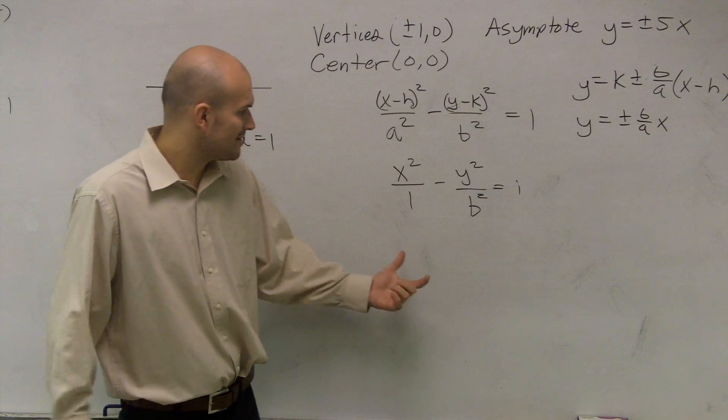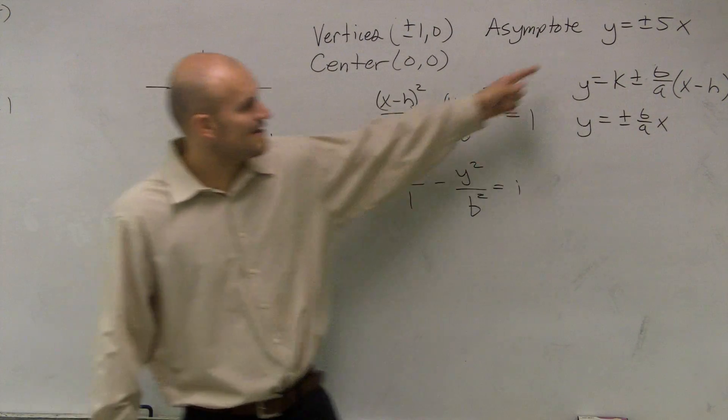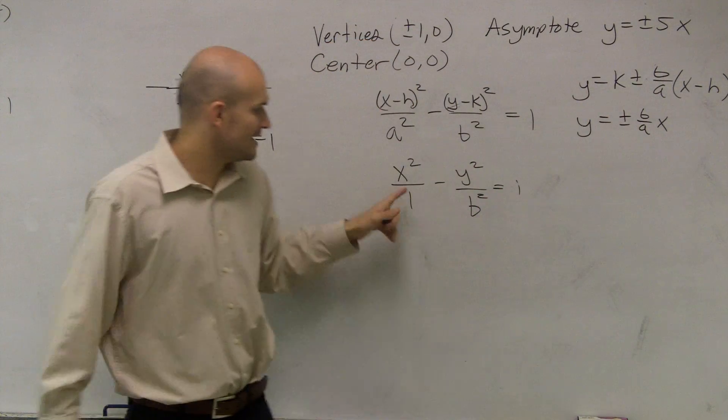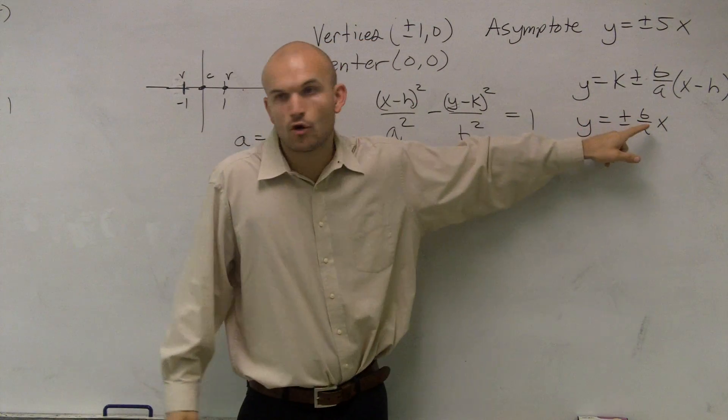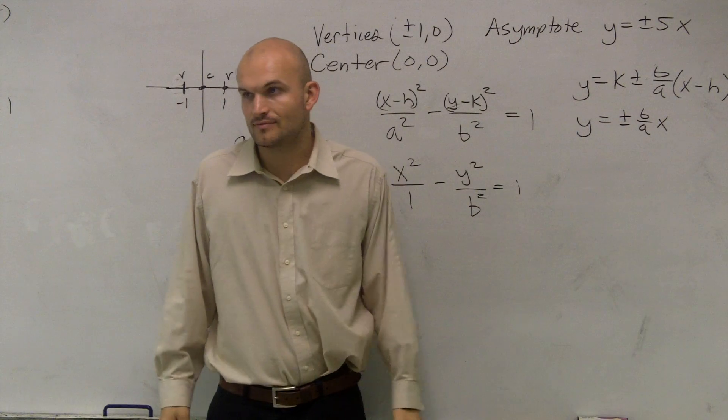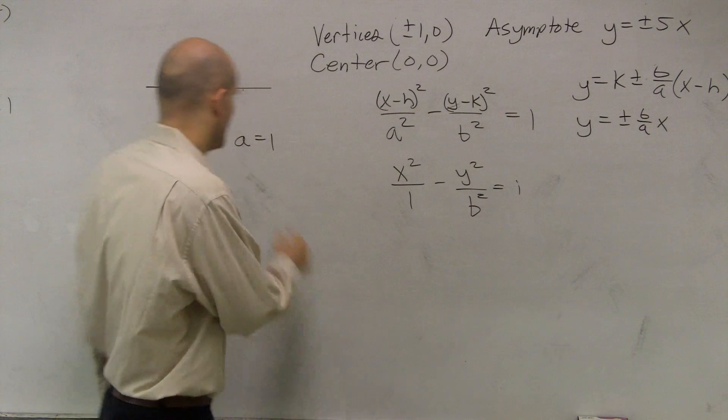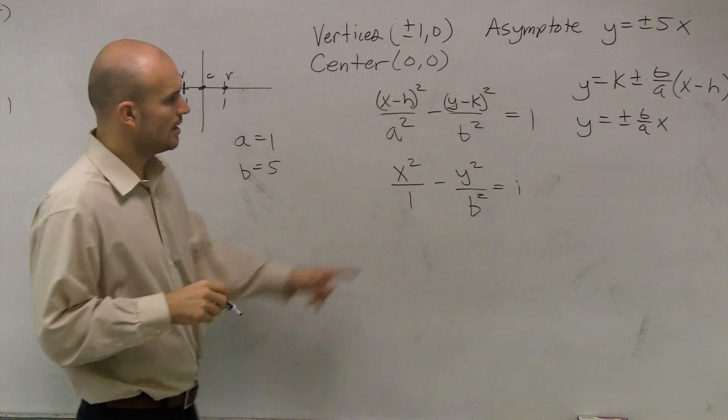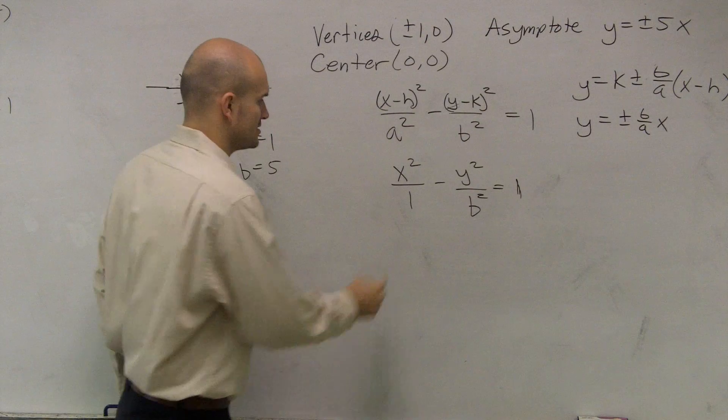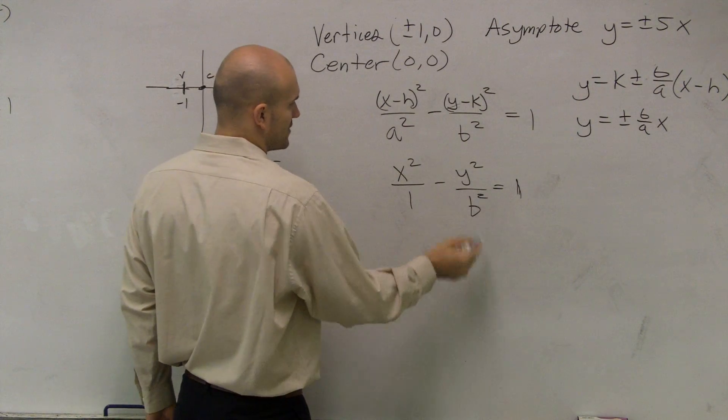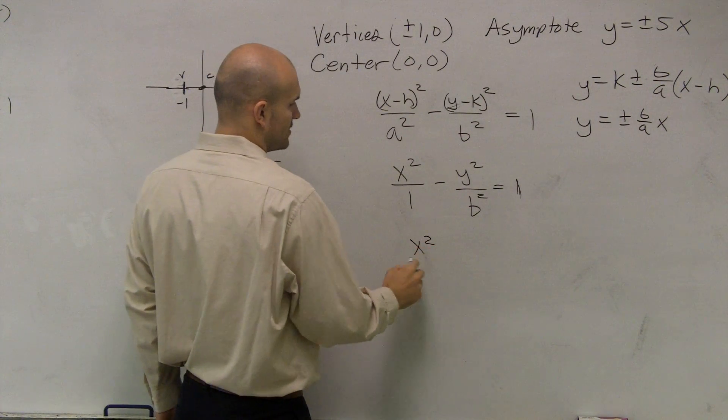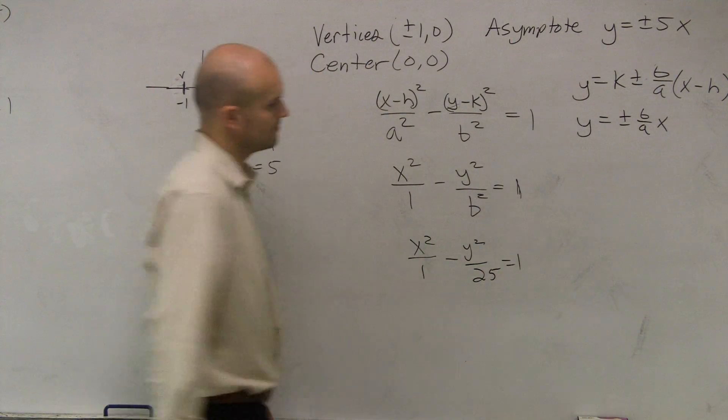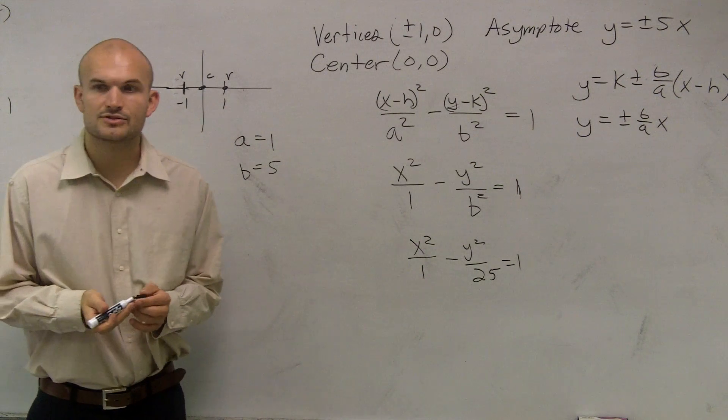So let's think about it, ladies and gentlemen. If I have y = ±5x is equal to ±B over A, the only thing I know is A is 1. Then what number over 1 has to equal 5? Five, right? So therefore, B has to equal 5. Then all I need to do is just plug that in. So I'll just plug in 5² from there, which equals 25. So x² over 1 minus y² over 25 equals 1. And there you go. That's your standard form equation.